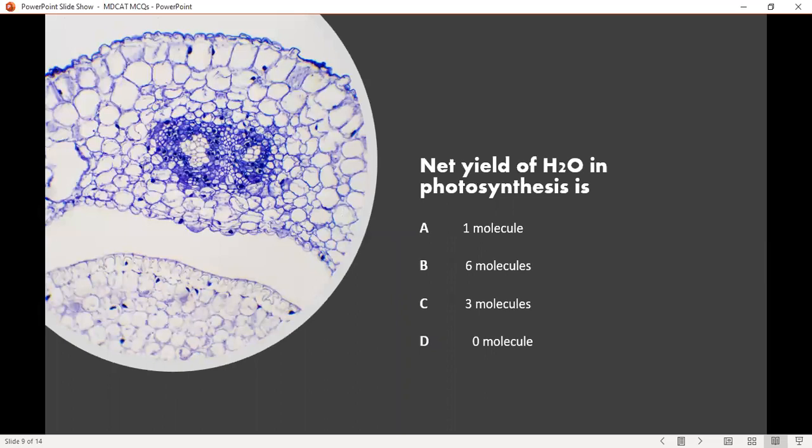The net yield of water in photosynthesis is option A one molecule, option B six molecules, option C three molecules, and option D zero molecules. The correct answer is option D zero molecules. Because water is used in photosynthesis, it is not released.